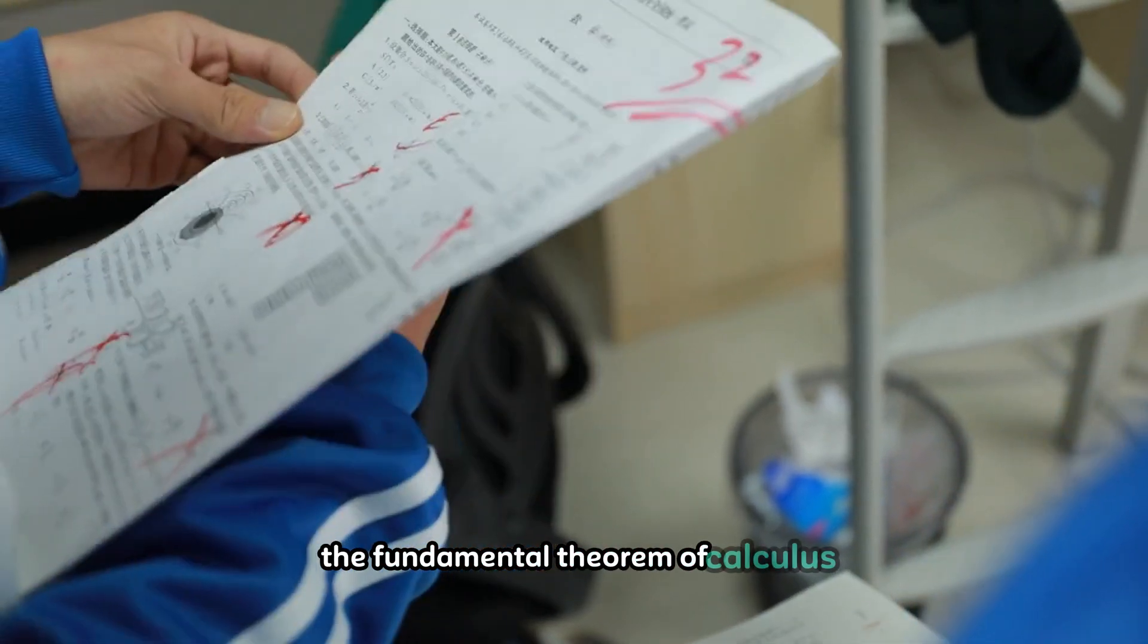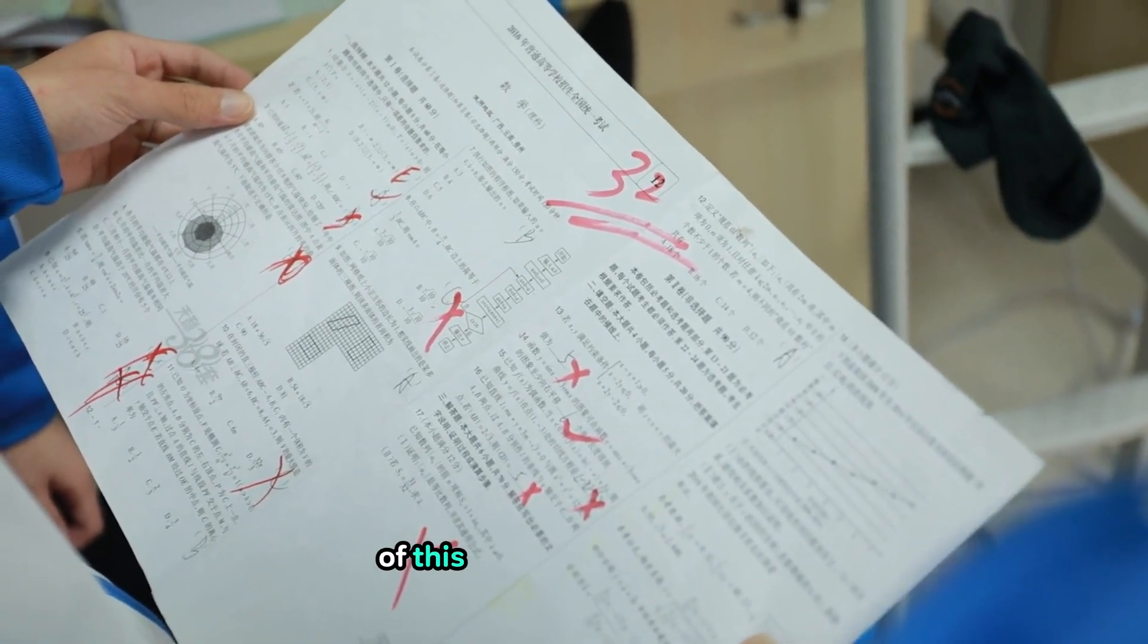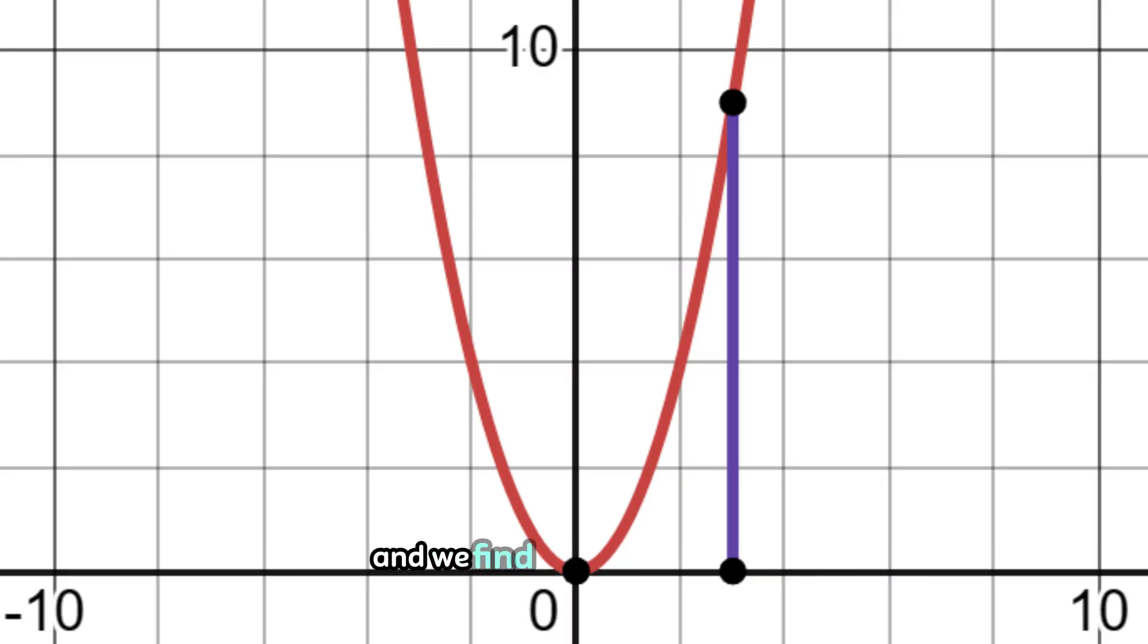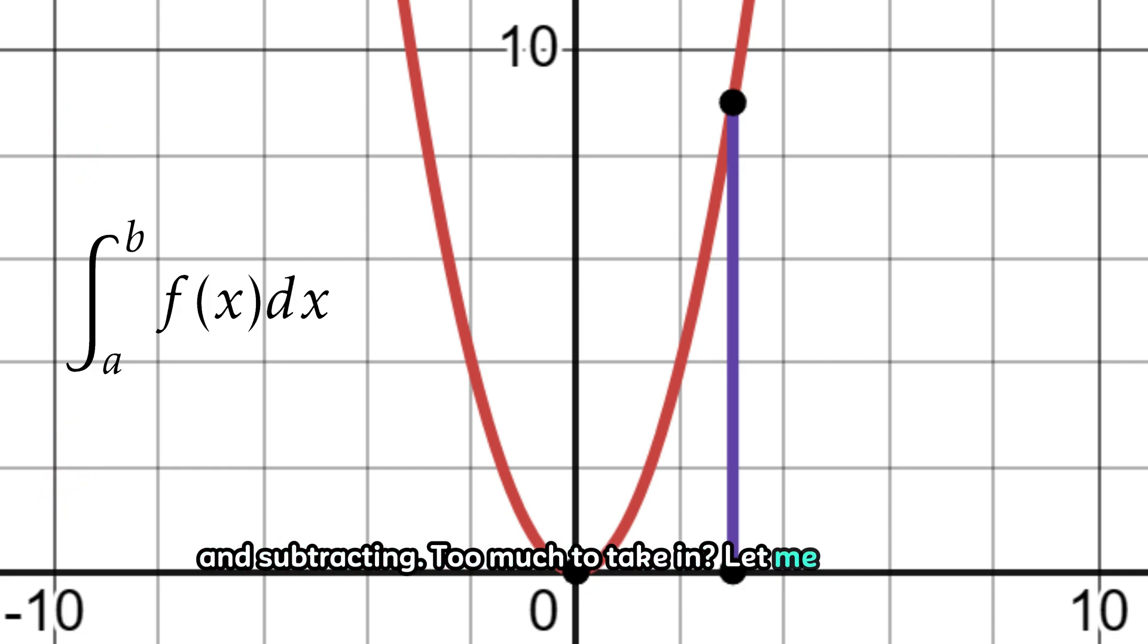The Fundamental Theorem of Calculus consists of two parts, each illuminating a different aspect of this profound relationship. Part 1 states that if we have a continuous function and we find its antiderivative, then we can calculate the definite integral of the function over an interval by evaluating the antiderivative at the endpoints of the interval and subtracting. Too much to take in. Let me try again. In simpler terms, part 1 allows us to determine the total change or accumulated effect represented by a curve by finding its antiderivative and evaluating it at the endpoints of the interval.